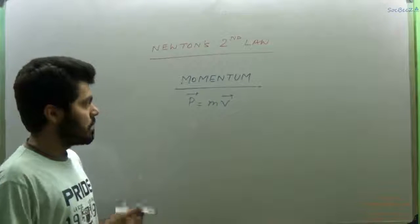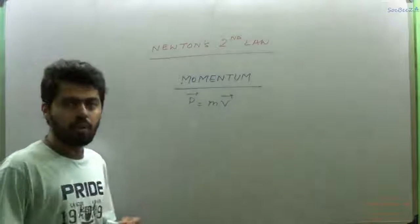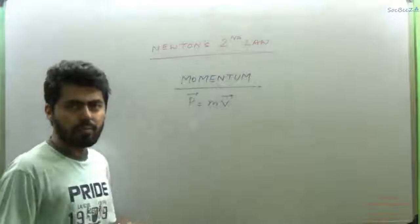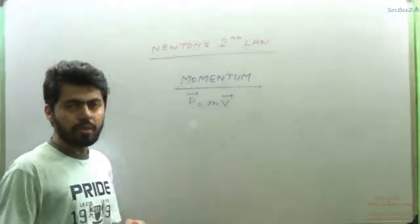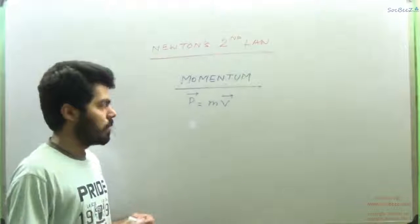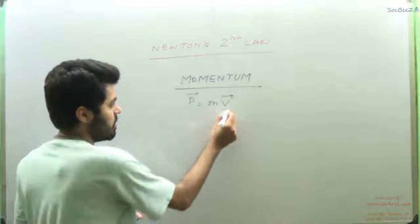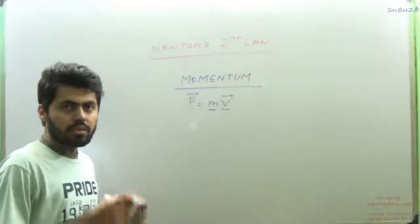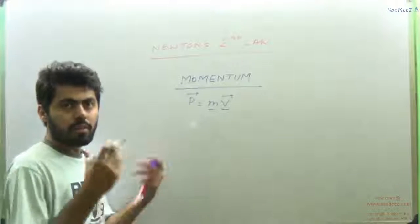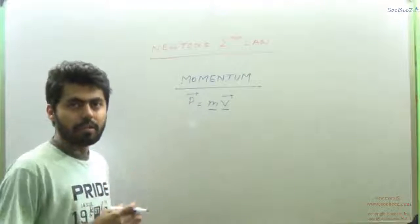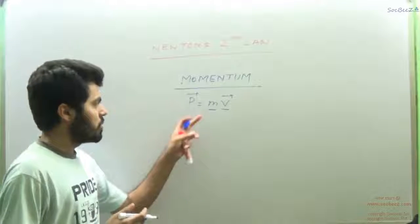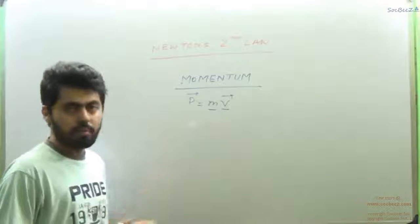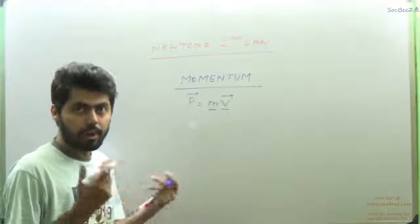Suppose a simple ball - a half kg ball - is coming at a speed of 100 km per hour. Then that speed multiplied by this mass gives momentum. And suppose instead of a ball, there is a truck coming at the same speed. So ultimately, mass of truck is greater than mass of ball, so the momentum of the truck will be much higher.